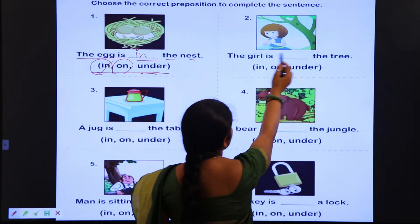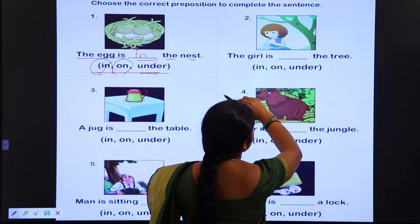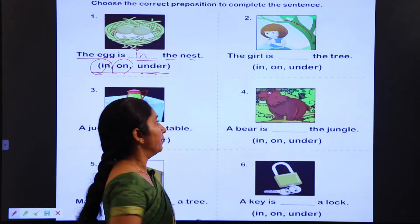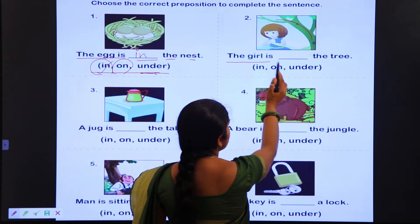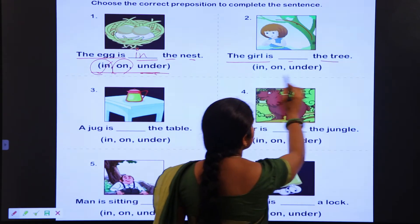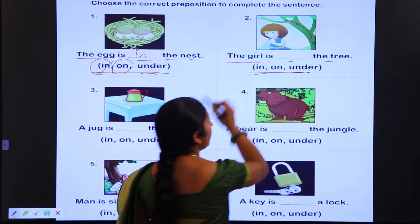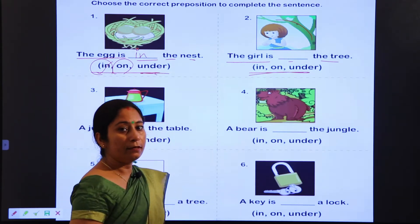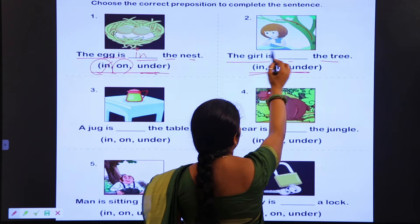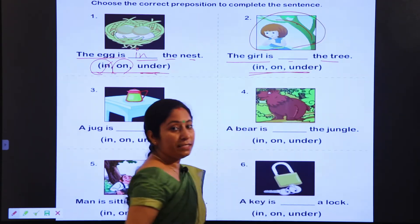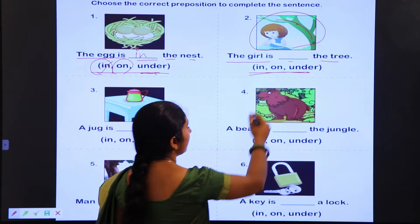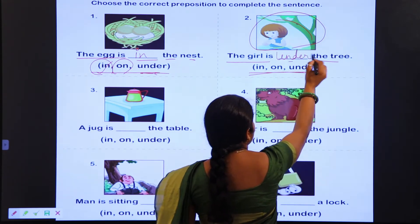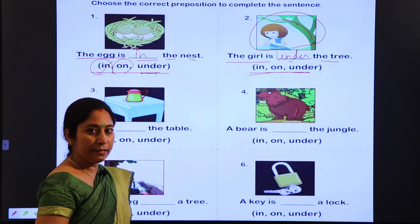Second one: you see here a girl is under the tree — is tree ke niche hai. So the girl is [dash] the tree. Aapne in teen words mein se — in, on, under — jo correct suitable preposition hai, woh fill karni hai. Girl kahan par hai? Is tree ke niche, ped ke niche. Toh hum yahan par kya write karenge — under. The girl is under the tree.